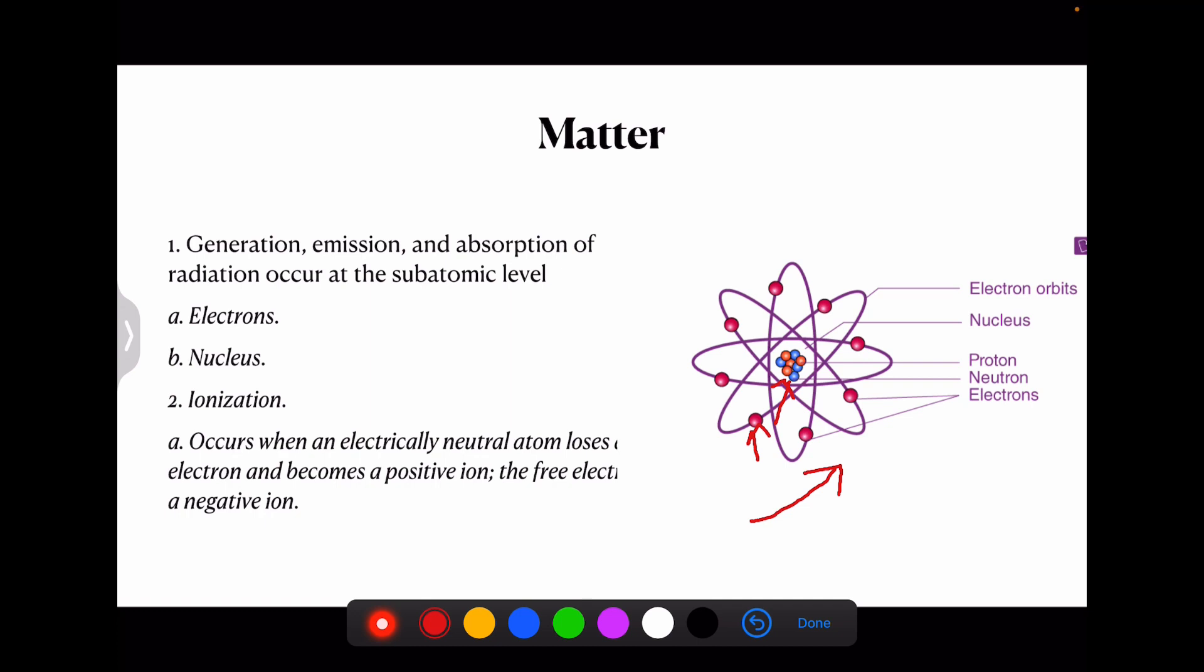Then comes the nucleus. This nucleus generally consists of protons and neutrons. Protons which are shown as the orange ones have a charge of plus one and mass of nearly 1836 times the mass of an electron. Then comes the neutron shown in blue color. These neutrons have no charge and are slightly heavier than the protons.